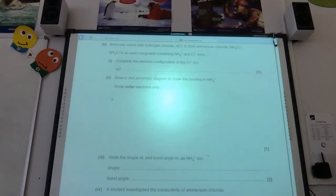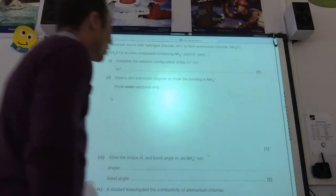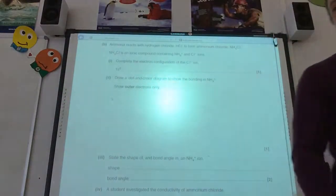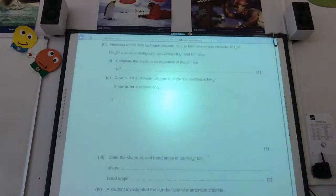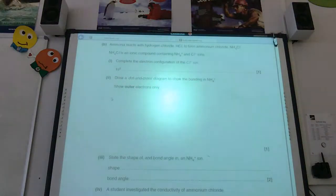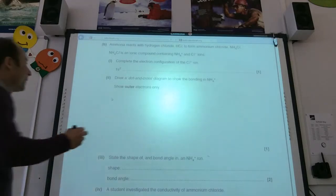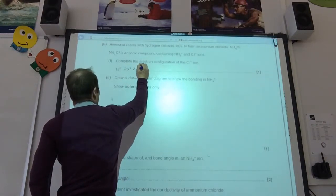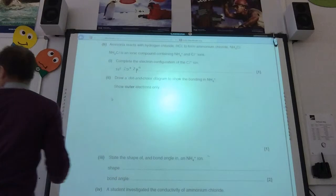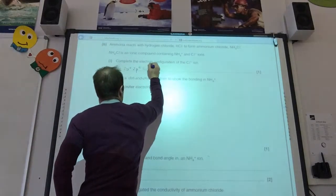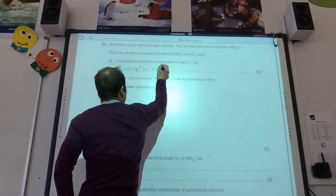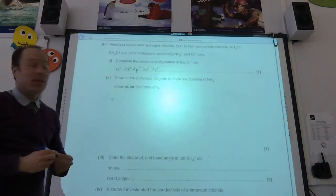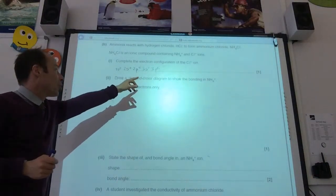So, moving on. Ammonium reacts with hydrogen chloride to form ammonium chloride. And they give me the formula for that. Complete the electronic configuration of the chloride ion. Okay, so they want it for the chloride ion. So, chloride is going to have an extra electron, isn't it? So, it's going to be 1s2 and 2s2 and 2p6. And then I've got 3s2, 3p6. Remember, if it was a chlorine atom, it would be 3p5 but it's chloride ion.